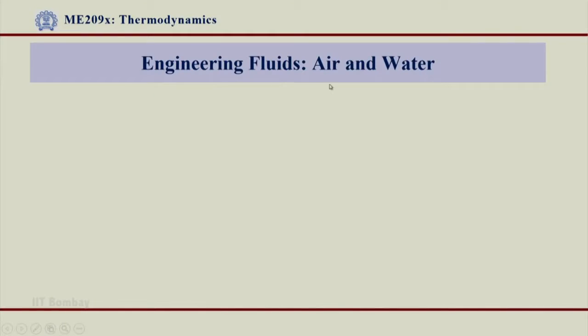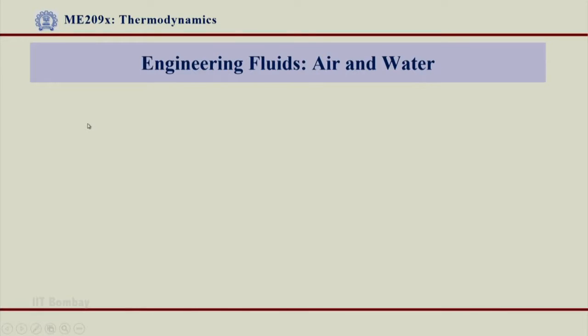Welcome back. In order to study properties of fluids, we are focusing mainly on two engineering fluids that are air and water, because these are the two fluids that we always deal with in practice in mechanical engineering. For example, we use air compressors, air condensers, and similarly water for various cooling purposes and various heating purposes in heat exchangers. These two fluids are predominantly used in most applications in mechanical engineering.